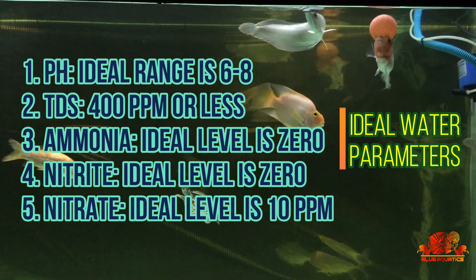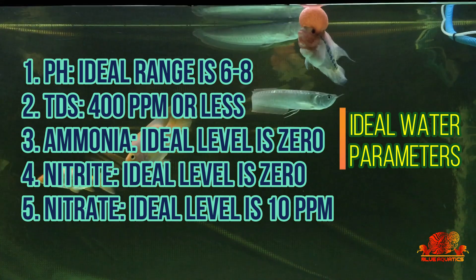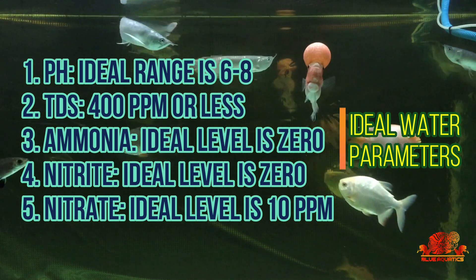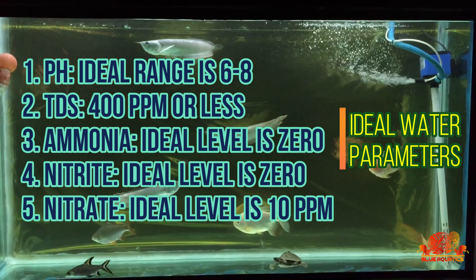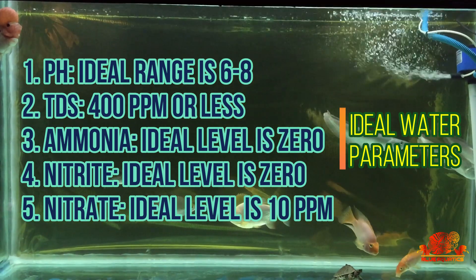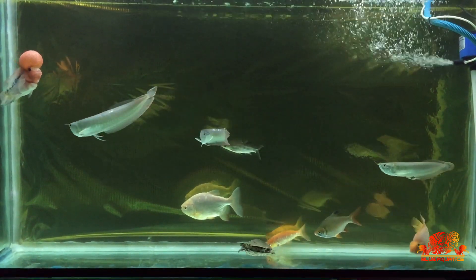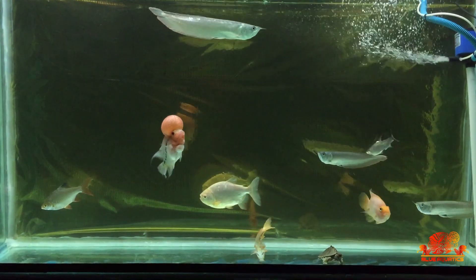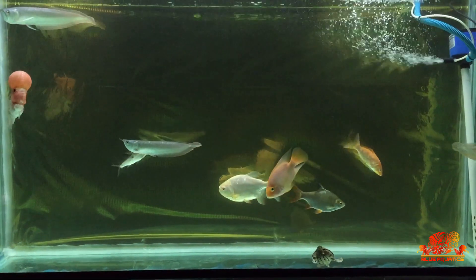Some freshwater fishes require a very low TDS level. Then comes ammonia — the ideal level is zero. The fourth parameter is nitrite — again the ideal level is zero. Then comes nitrate, which is considered less harmful compared to nitrite, so the ideal level could be 10 ppm. These are the ideal water parameters required by freshwater fish, so before using any water, test it according to your fish's requirements.